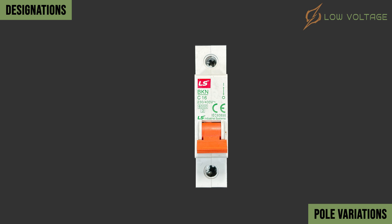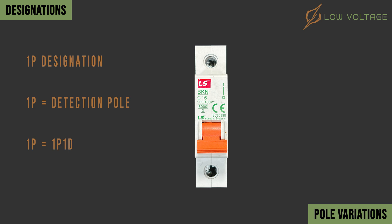This is a one pole MCB, having one P designation. This pole is a detection pole, so it can also be defined as one pole, one detection, or 1P1D, having one detection symbol.